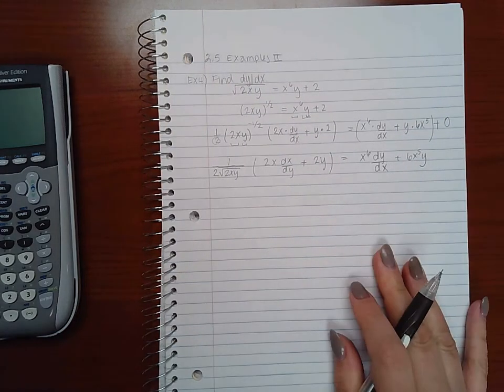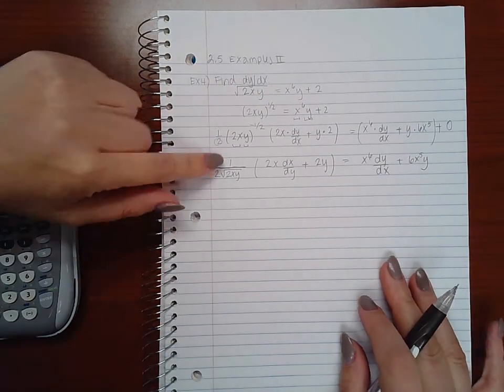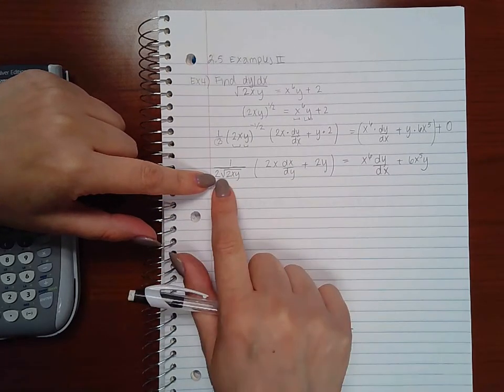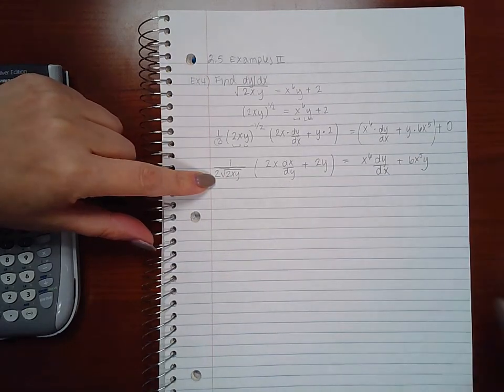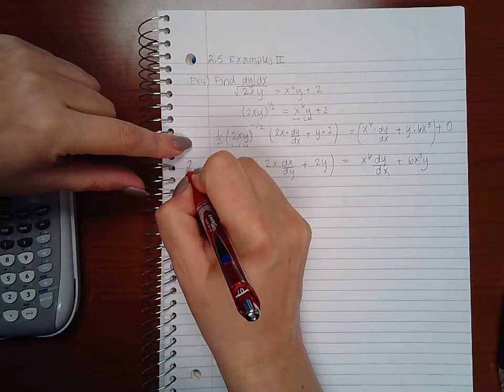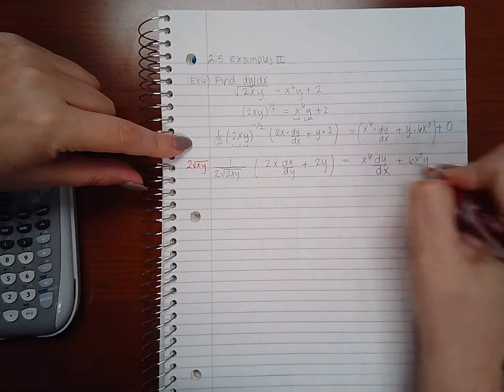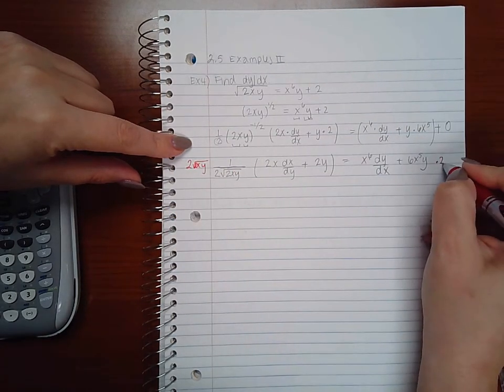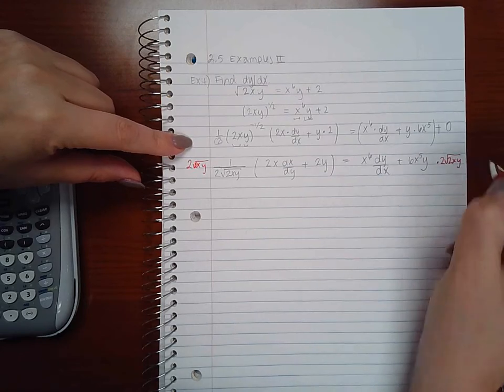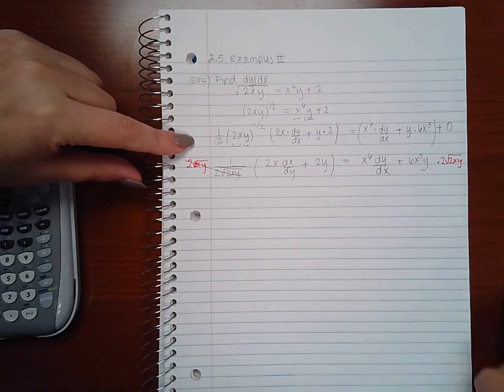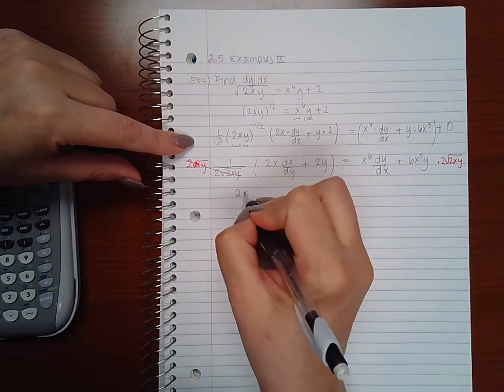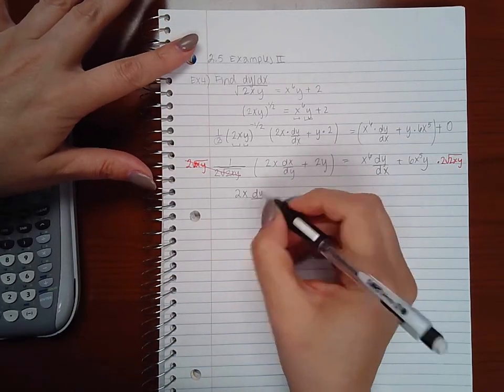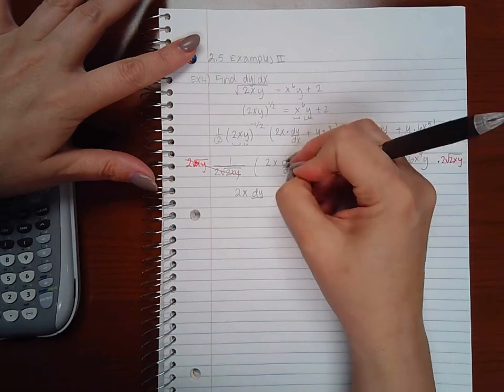Now before I continue I do want to multiply by this denominator so that we no longer have a fraction here. It will make things a little bit easier to compute later. So I'm going to multiply both sides by 2 and then the square root of 2xy so that they'll reduce here leaving me with just 2x. Pretty much what's in the parenthesis—oh I wrote these backwards over here for some reason.